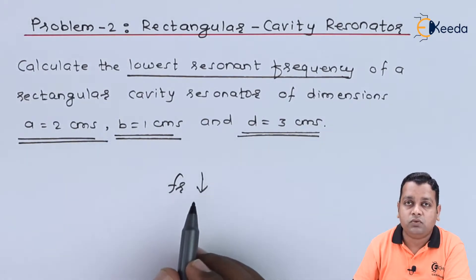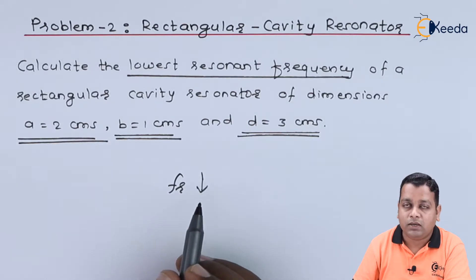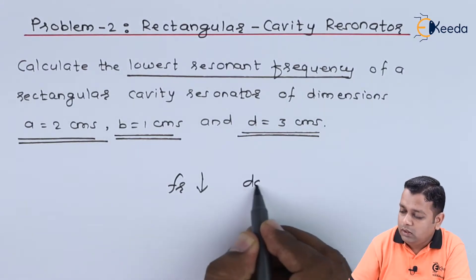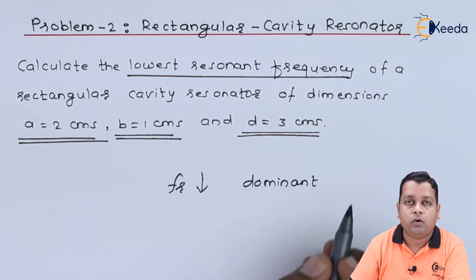The lowest value for the resonant frequency, whenever it is obtained, we call the mode of operation to be the dominant mode of operation.